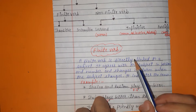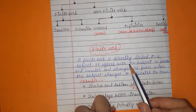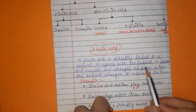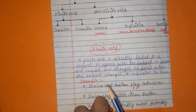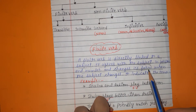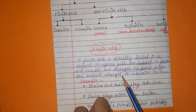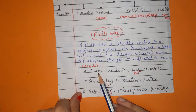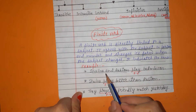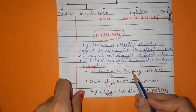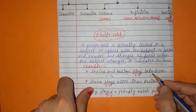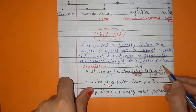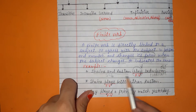A finite verb agrees with the subject in person and number and changes its form. This is the main thing — 'changes its form' means a finite verb changes when the subject changes, and it indicates the tense. For example: 'Shaina and Rustam play badminton.' Here the subject is 'Shaina and Rustam,' 'play' is the verb, and 'badminton' is the object.